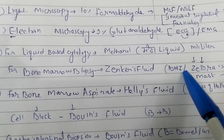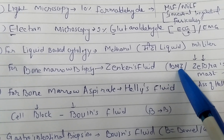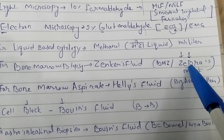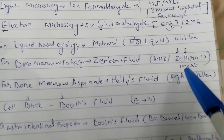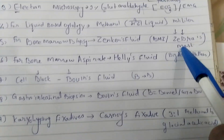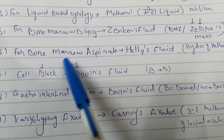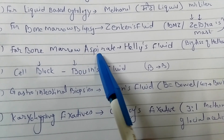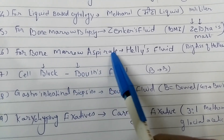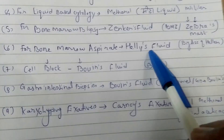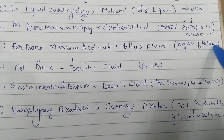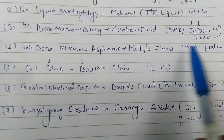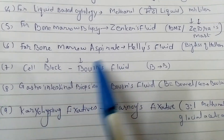For bone marrow biopsy using Zenker's fluid, the mnemonic is BMZ — basement membrane zone — or the zebra mnemonic: Z for Zenker's and B for bone marrow. Zebra is the key image to remember. For bone marrow aspirate, we use Helly's fluid — a dirty mnemonic involving Halle Berry or Helen, something you'll remember longer and better.